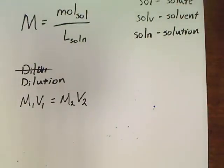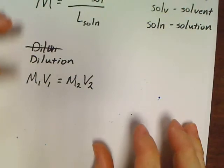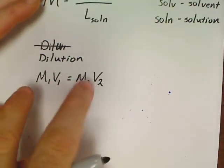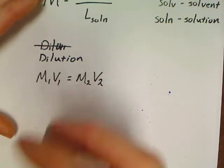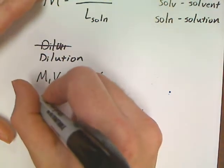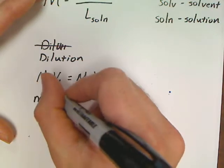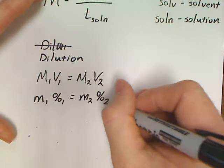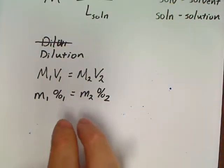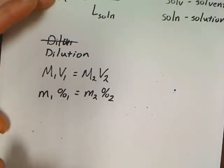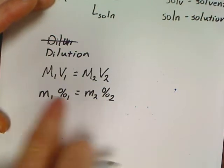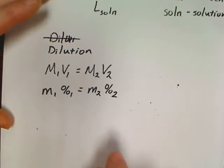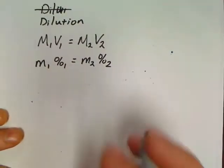Sometimes you'll do a dilution problem except instead of molarities and volumes, it'll give you masses and percents. That equation is: m₁ × percent₁ = m₂ × percent₂. The great thing about doing a dilution with masses and percents is you don't even have to move your decimal on the percent because it's a proportion.